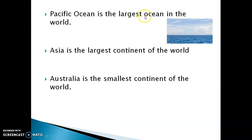Among the oceans, the Pacific Ocean is the largest ocean in the world. Among the continents, Asia is the largest continent of the world. We stay in the Asian continent, as the country India lies in the Asian continent. Compared to that, Australia is the smallest continent of the world.